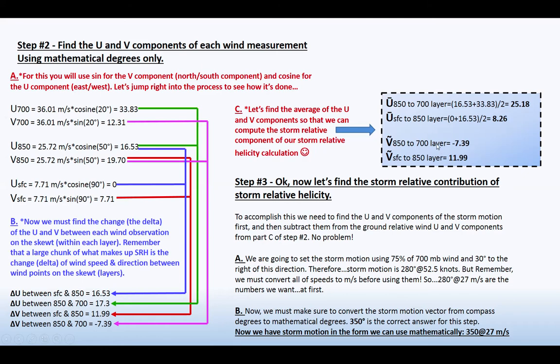So once you've found the averages, this is important. The reason why you want to find the averages is for calculating the storm relative portion of storm relative helicity so that you can subtract out the storm motion from the ground relative wind. Okay. So step three, now let's find the storm relative contribution of storm relative helicity. To accomplish this, we need to find the U and V components of the storm motion first, and then subtract them from the ground relative U and V components from part C of step two. No problem.